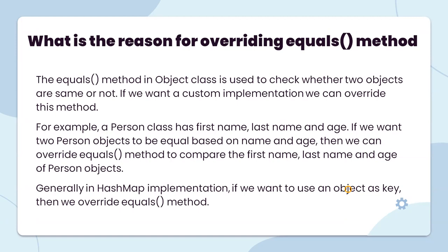Next: what is the reason for overriding the equals method? The equals method is in the Object class. In the Object class, it checks whether two objects are the same or not. If we want a custom implementation, we can override this method. The equals method allows us to compare whether two objects are the same.